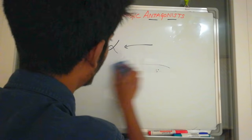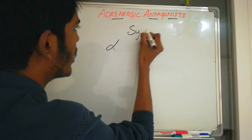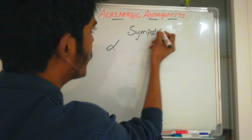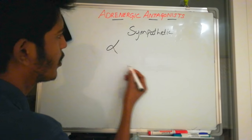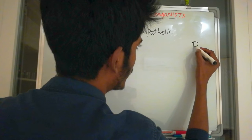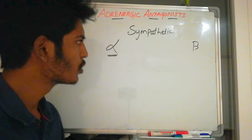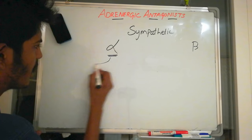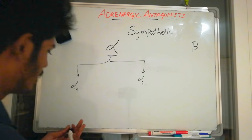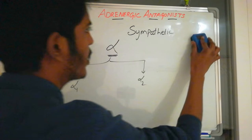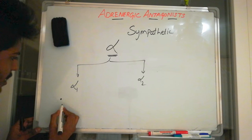Adrenoreceptors are located in and work with the sympathetic nervous system of our body. There are two types: alpha adrenoreceptors and beta adrenoreceptors. In this video, I will be focusing majorly on alpha adrenoreceptor blockers. Alpha adrenoreceptors are further divided into two groups: alpha 1 and alpha 2.